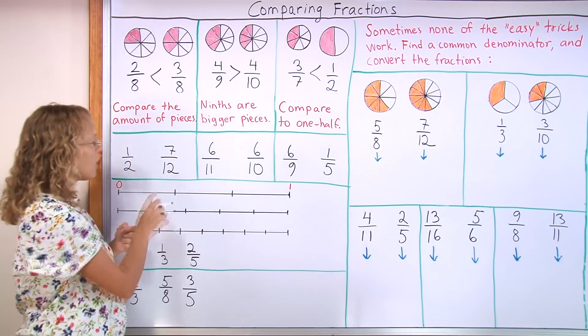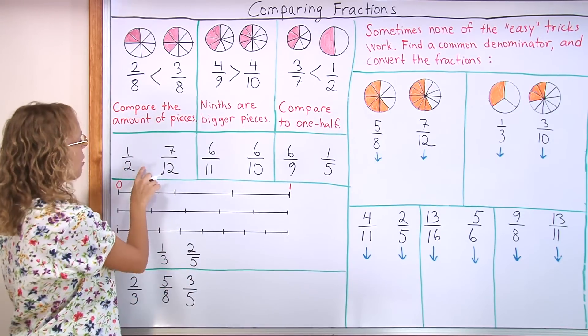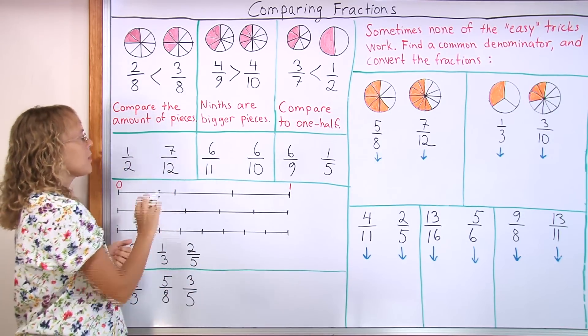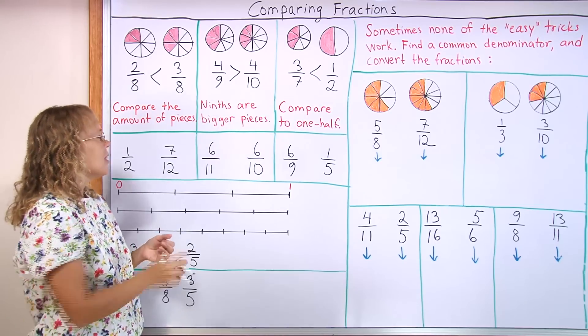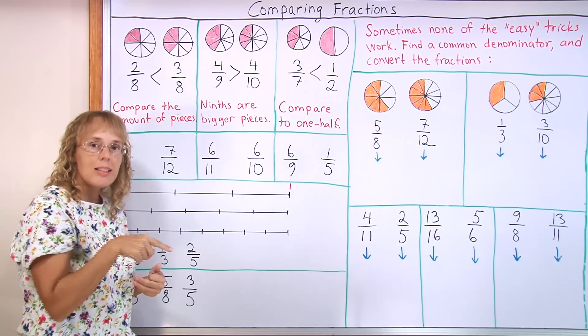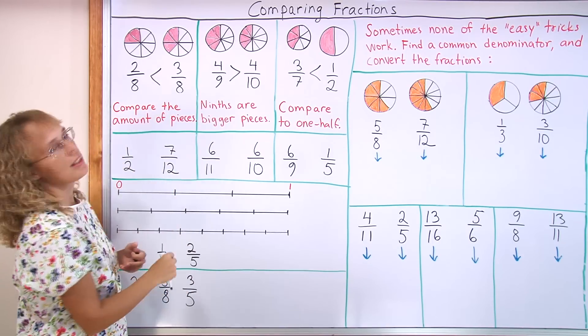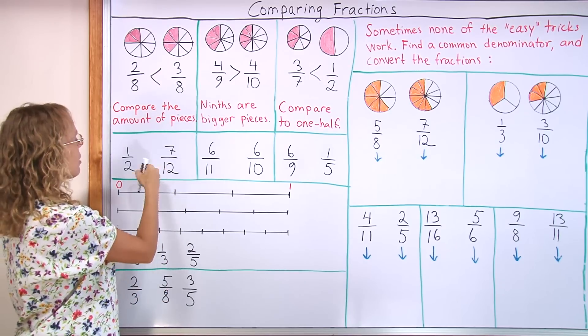And let's solve these three also using these easy principles. One half and 7/12. Now, 6/12 would be exactly one half. If you had 12 pieces and took six of them, then that would be exactly one half. But I have more than 6/12. So this is more than one half.